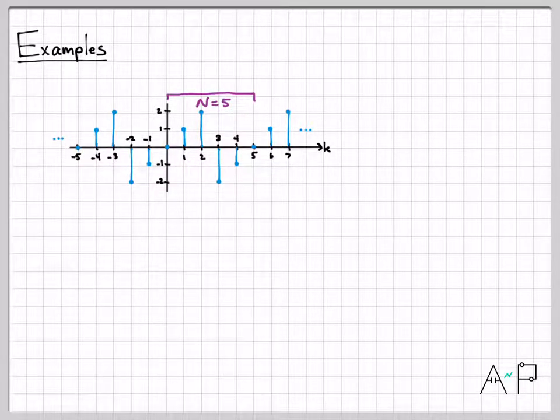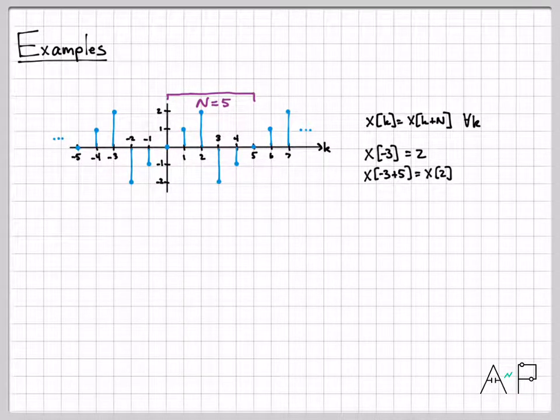So you can see that every 5 samples, this pattern, this kind of linear ramp, starts over again. And if we want to, we can go ahead and check that this equation holds. Does x of k equal x of k plus n for all time k? So we can just check a few points. So for instance, at time minus 3, I have a signal value equal to 2. If I add 5 to that, x of minus 3 plus 5, that's x of 2. x of 2, I'm also equal to 2, right? So that does indeed hold. And no matter what time you pick on the axis, whether I pick minus 4, or I pick a time 5, or time 6, if I add 5 to that time, I get right back to where I started. And you can see that visually here in the plot.